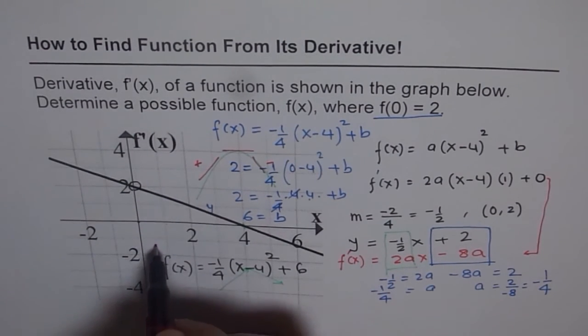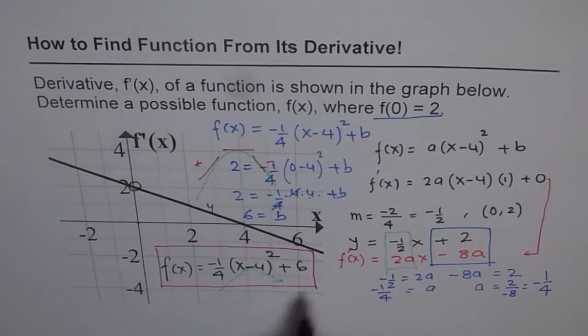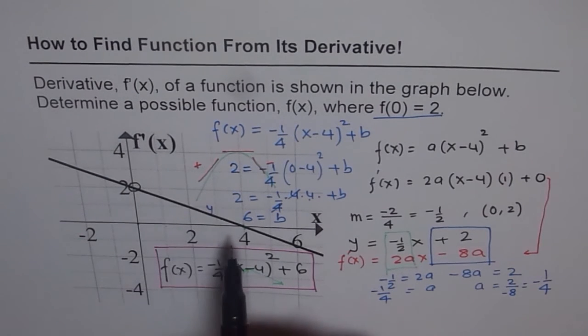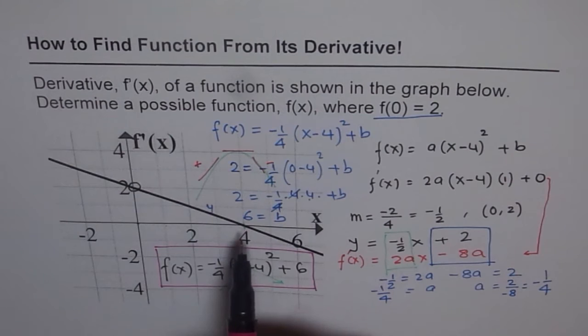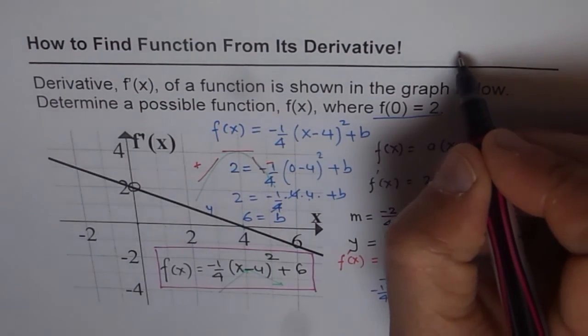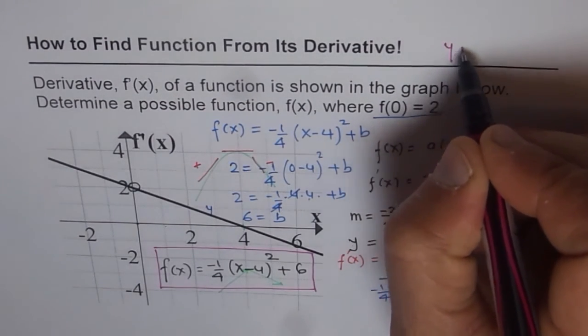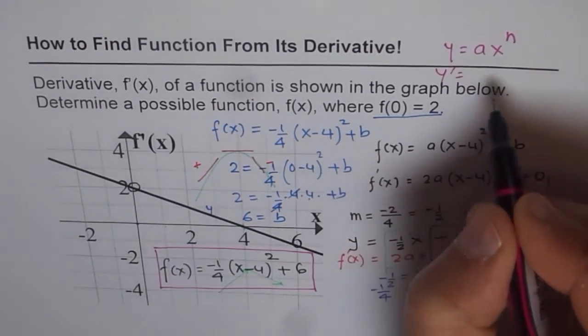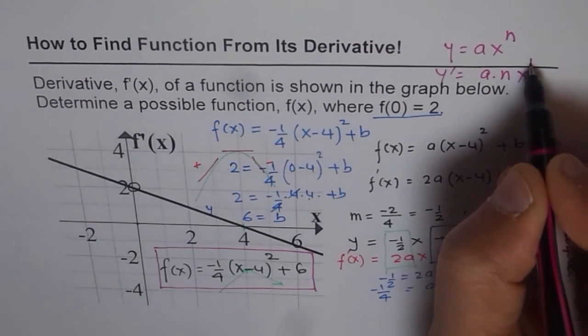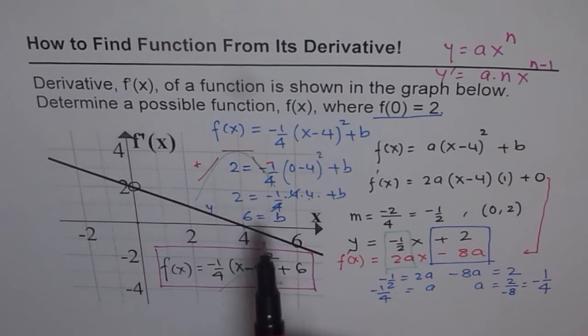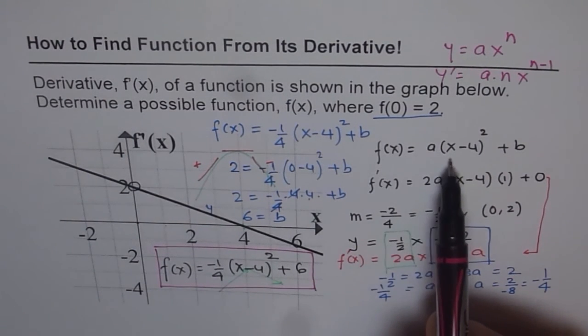I hope you understand and appreciate the steps which we have taken to solve this question. Let's go through it once again. Now if you are given a derivative of a function, you should remember one thing. That derivative is 1 degree lower than the function. Power rule. If you have a function, let's say y equals ax^n, then what is y'? y' is a times n times x^(n-1). Do you see that? So derivative is 1 degree lower than the function.